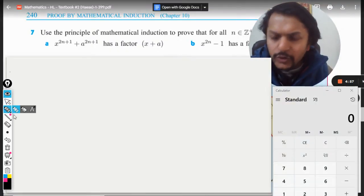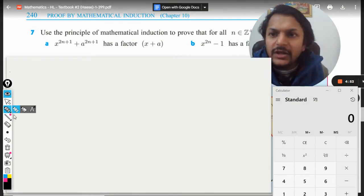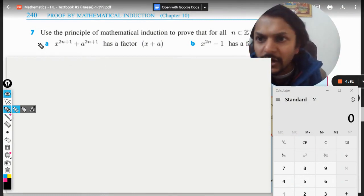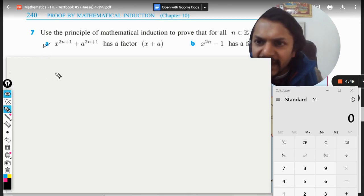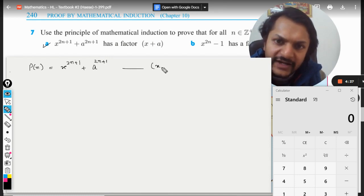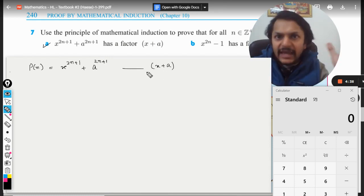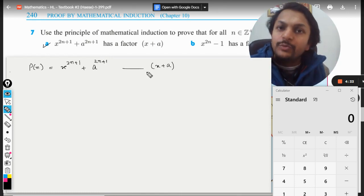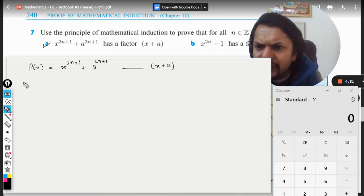Okay dear students, let us see another example from mathematical induction. I'm going for part A now. The statement is that P(n) equals x raised to power 2n+1 plus a raised to power 2n+1, and it has a factor of (x+a). This is what we need to prove with the help of mathematical induction.